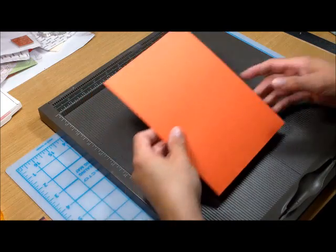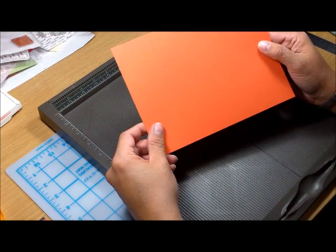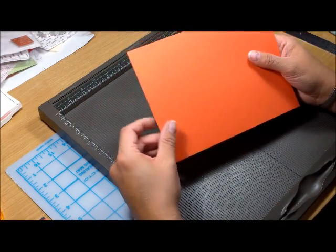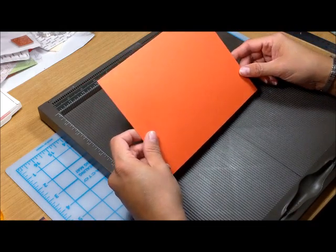The first thing you need to do is cut a piece of 6 inch by 8 inch cardstock and I'm using Stampin' Up! Tangerine Tango.